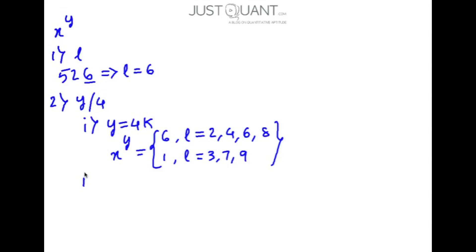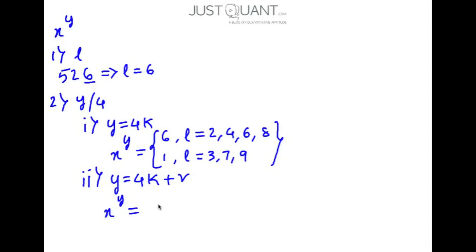In the next case, where the value of y is not exactly divisible by 4, you can write y as 4k plus r, where r is the remainder that we get upon dividing y by 4. In such a case, the unit digit of x to the power of y will be equal to the unit digit of l to the power of r, where l is the unit digit in x and r is the remainder obtained upon dividing y by 4.